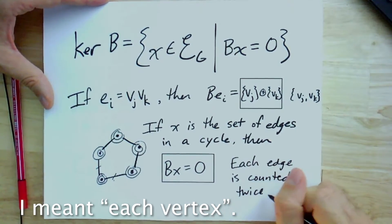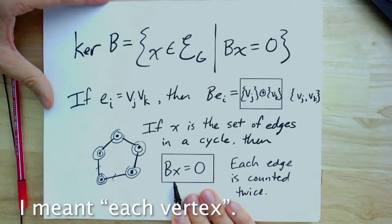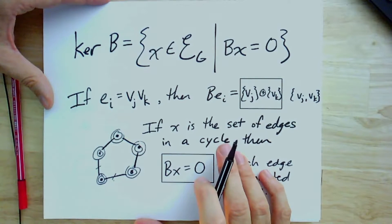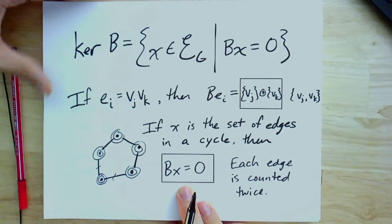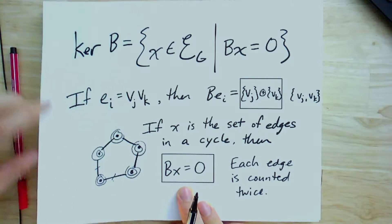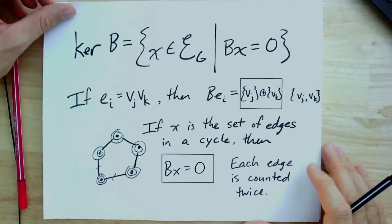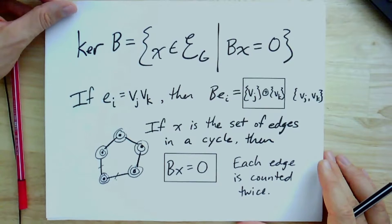Now, you might hope that every element of the kernel is a cycle, but that's not the case. All we've seen here is that every subset of edges that comes from a cycle will be in the kernel of the incidence matrix. It will have zero boundary, if you will, but that's not going to be everything. And one thing we may end up doing is expanding a little bit our idea of what we even mean by a cycle.